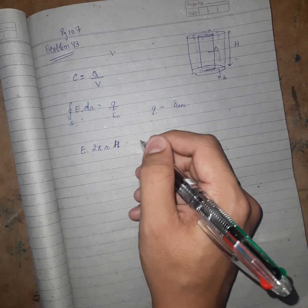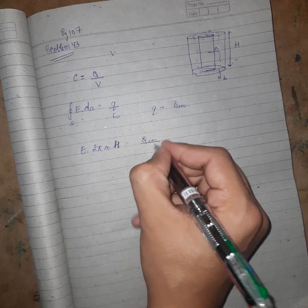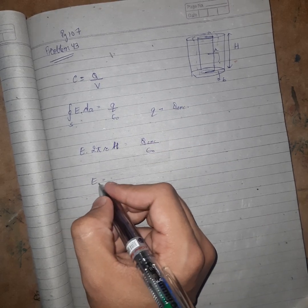So E is Q enclosed upon ε₀ into 2πr into h.